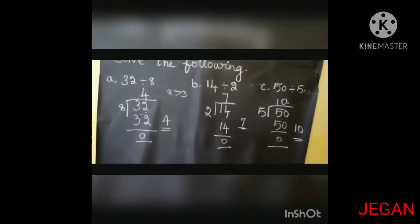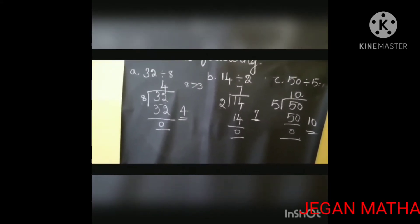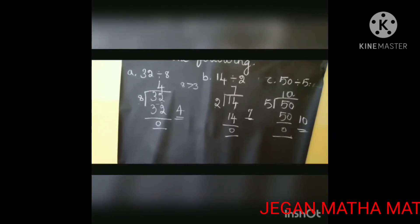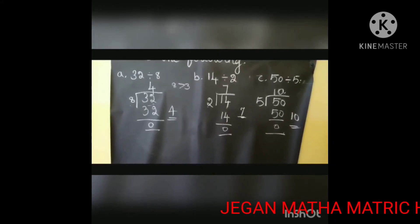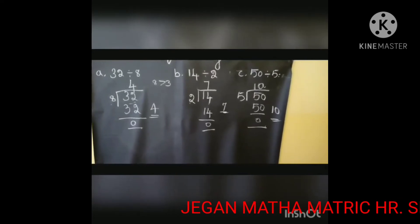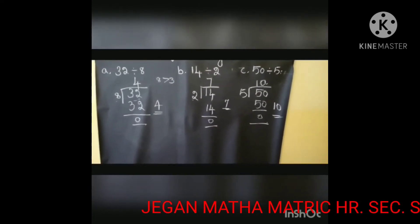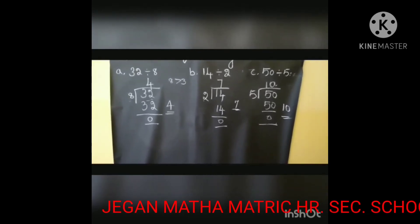Listen carefully. First sum: 32 divided by 8 — you know 8 4's are 32. Next one: 50 divided by 5 — you know the 5 table, 5 10's are 50, so the answer is 10. Come let's see the next sum.